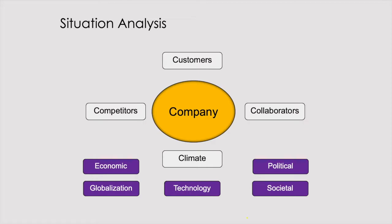Here's the company — and this could also be a product if you're rolling out a new product or service. We have customers, and we call this the micro environment. We say micro because we have a little bit of control over it, and we should know our customers very well — we're able to target market. We also have collaborators: organizations that work with us, which are also considered our stakeholders.